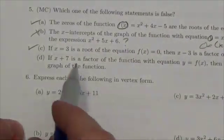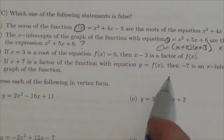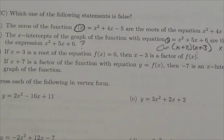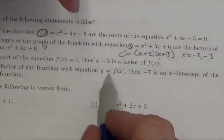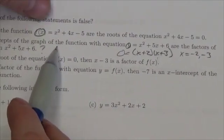And then finally, if x plus 7 is a factor of the function with the equation, then negative 7 is an x-intercept of the graph. See, this is interesting because this is saying essentially the exact opposite of what B is saying.